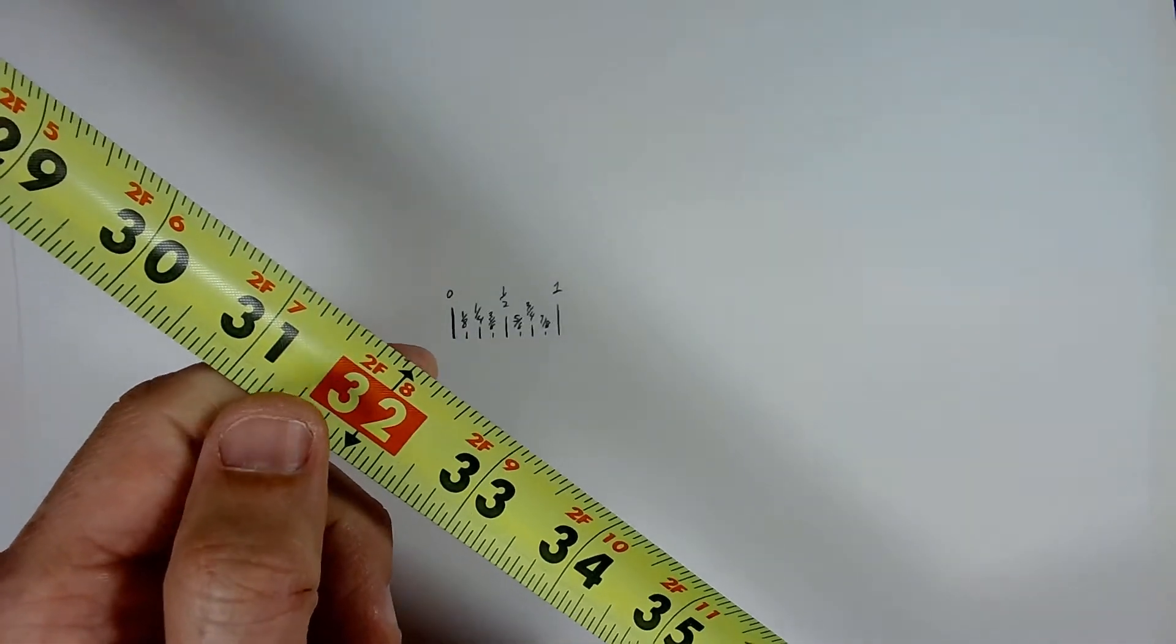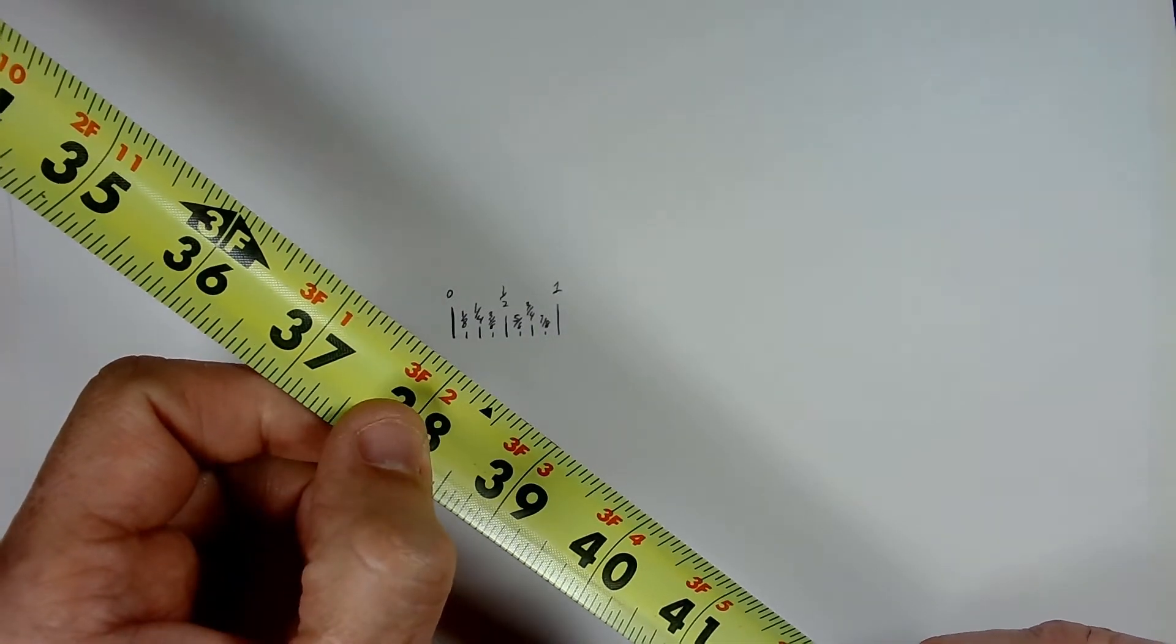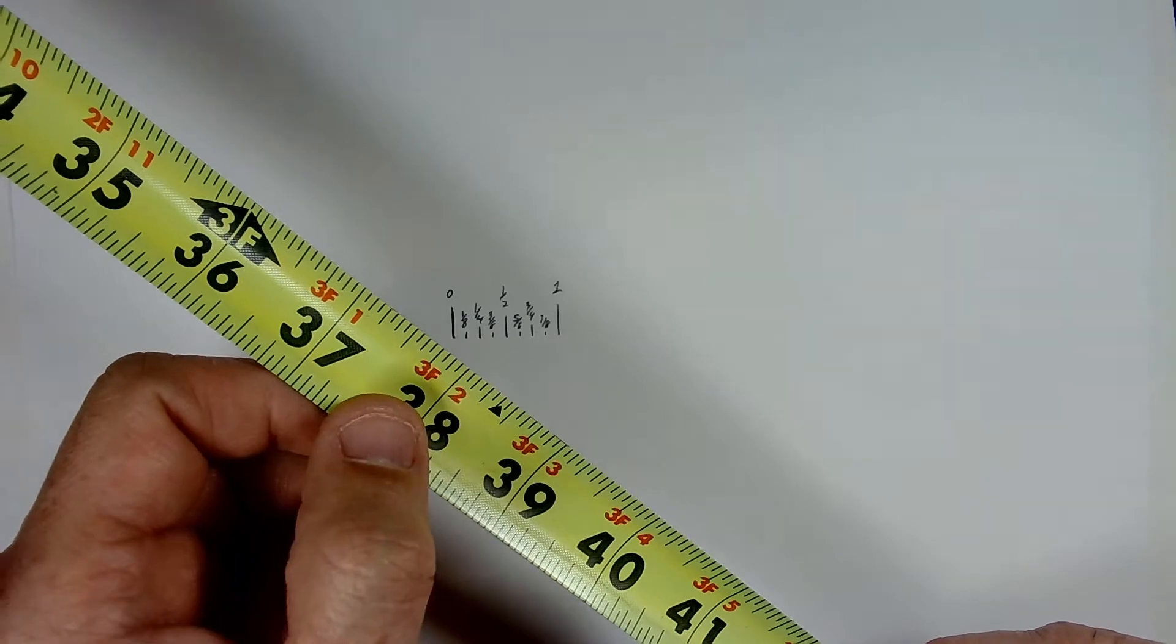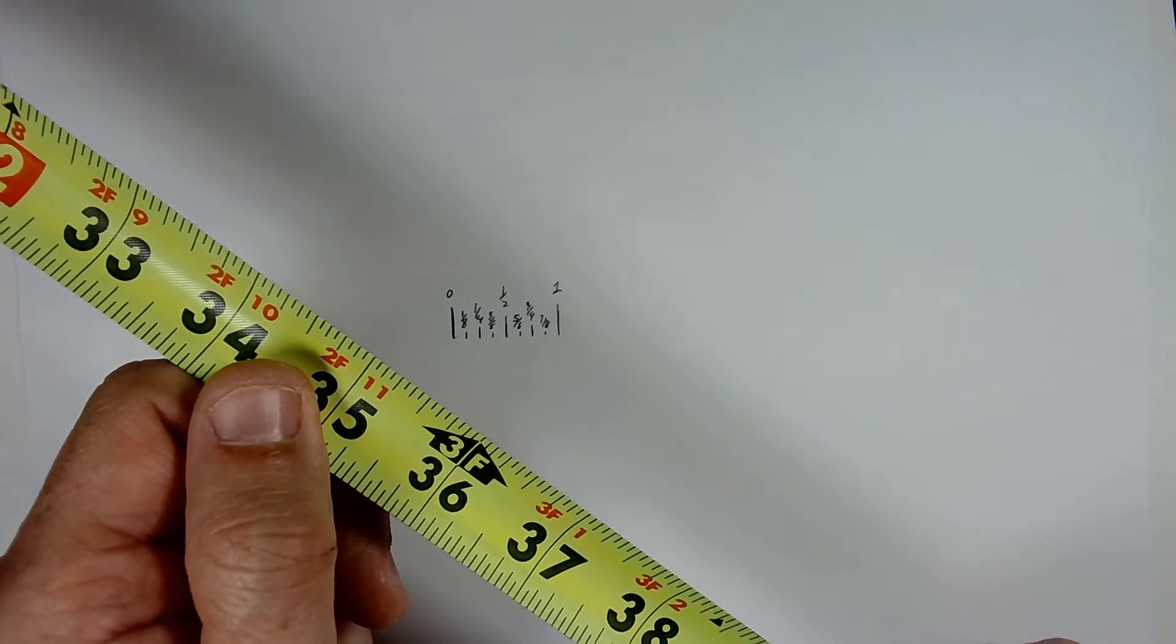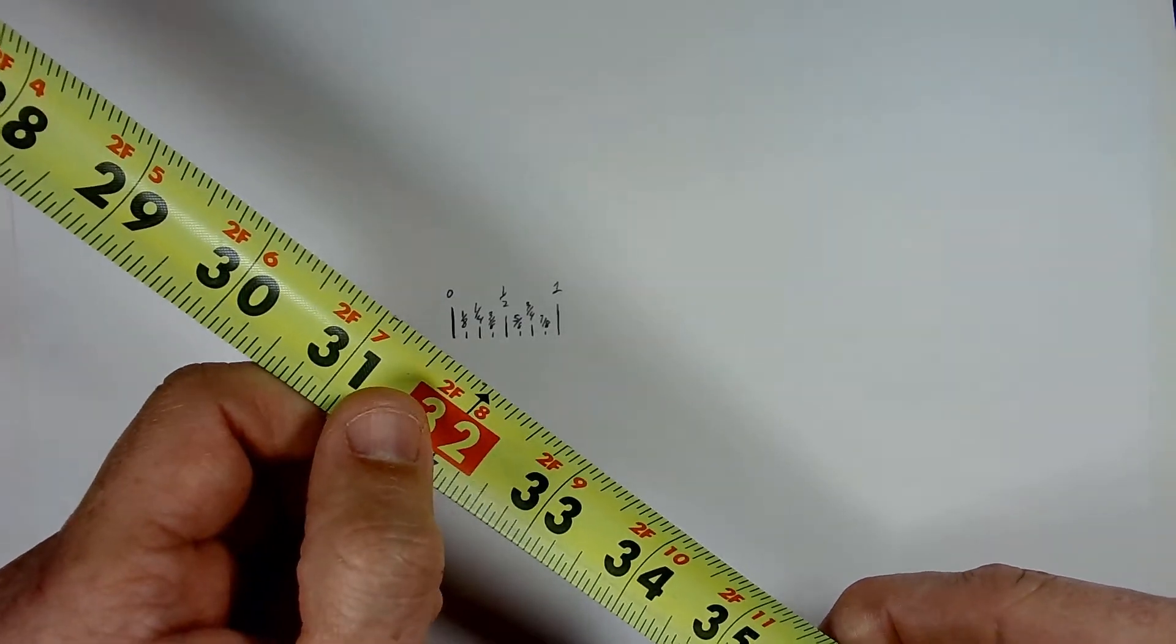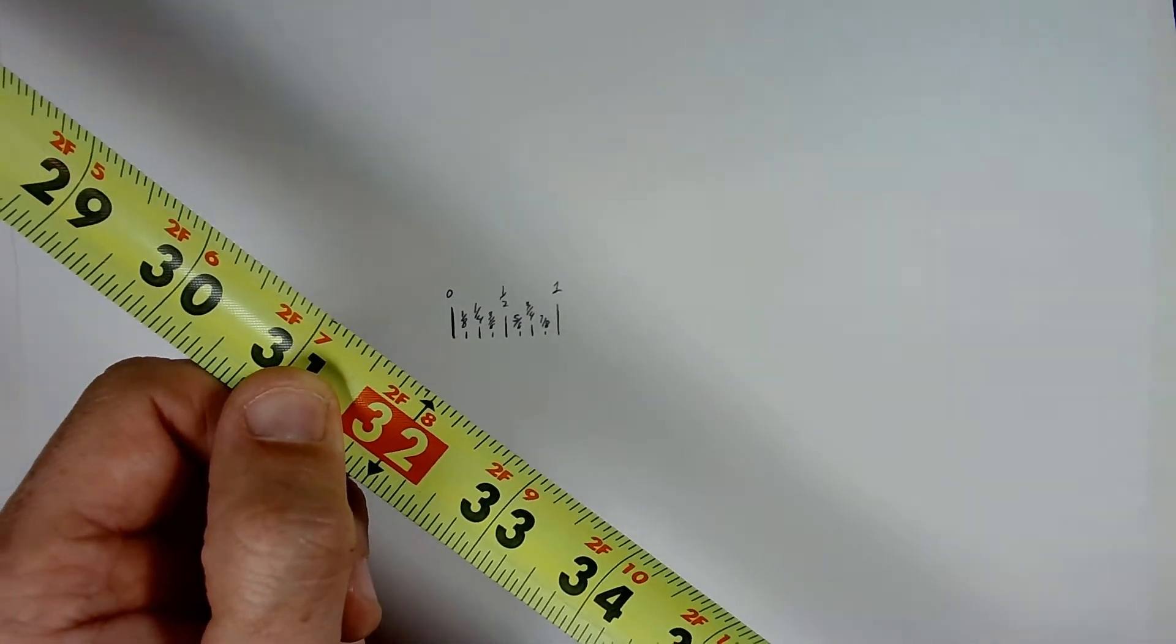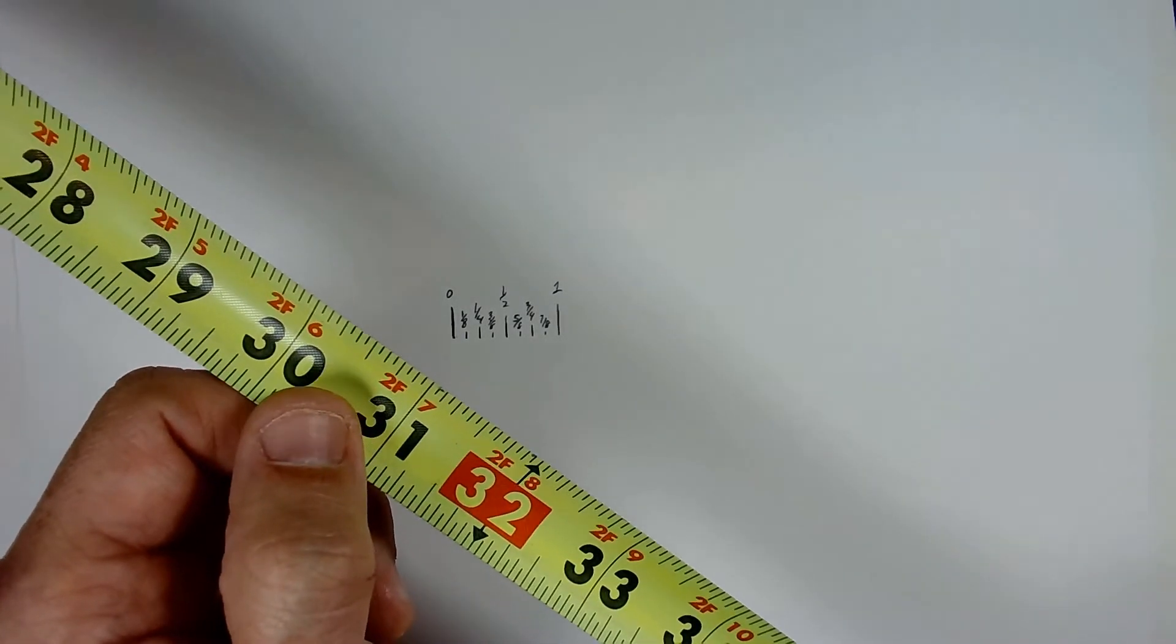So if you have it extended out and you're on a ladder and you're trying to get a good measurement, then it's easier to see at a glance so that you can get the measurement you need. But every sixteen inches, it's going to be marked with a red letter. So sixteen, thirty-two, forty-eight, so on and so forth.